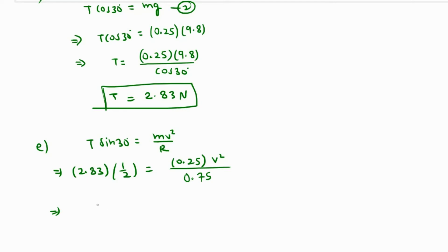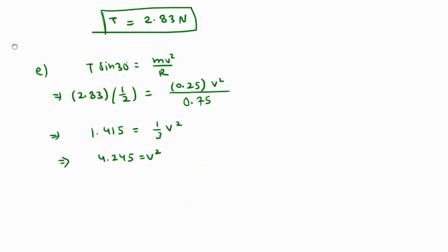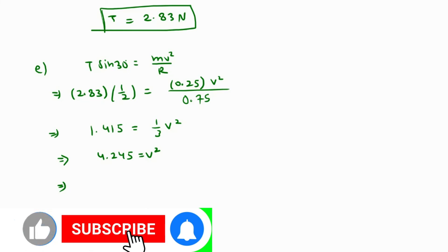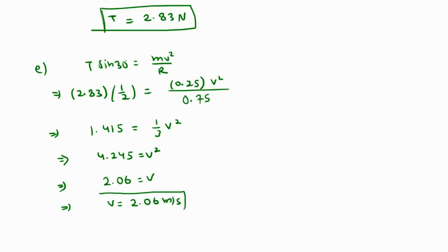Cross multiply: 2.83 over 2 is 1.415, and this equals 0.25 over 0.75 which is 1 over 3 times v squared. Multiplying both sides by 3 we get 4.245 as the value of v squared. If we take square root both sides, the value of v comes out as 2.06 meters per second.